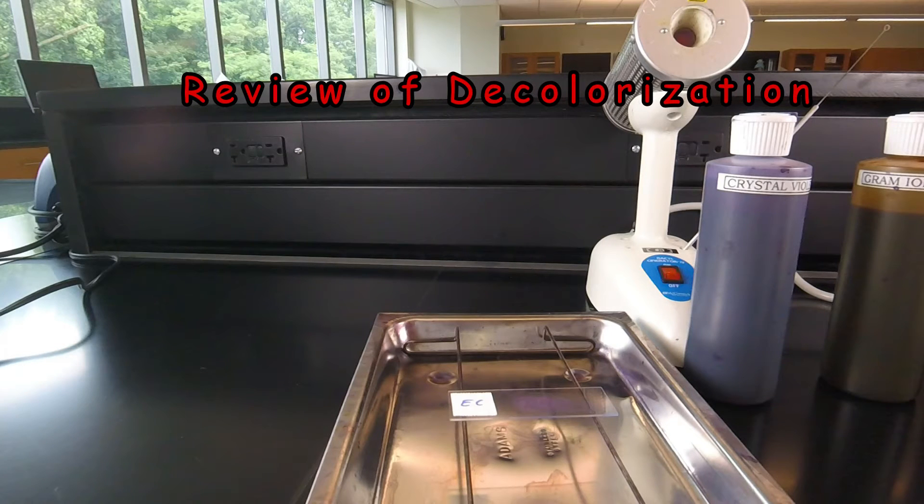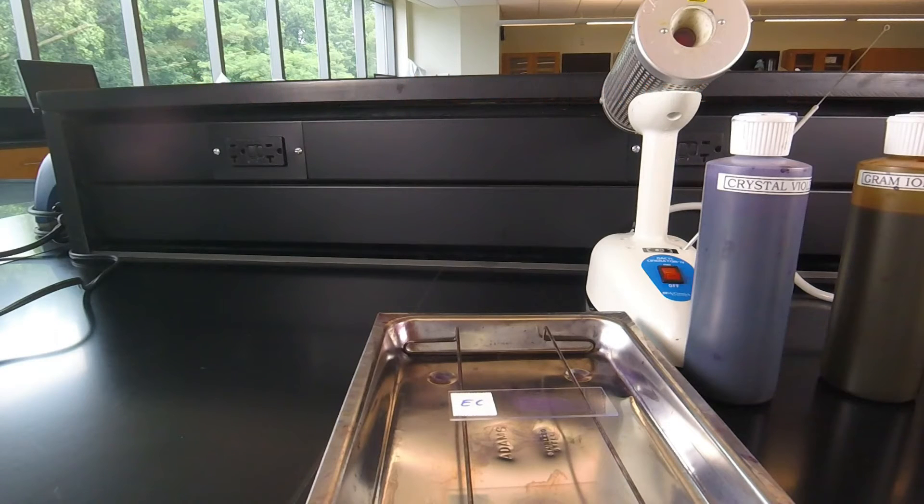Since the decolorization step is the most critical step in the Gram stain, let's review the decolorization step one more time. Now this slide has already been stained with crystal violet and treated with Gram's iodine, and now it's ready for the decolorization step.